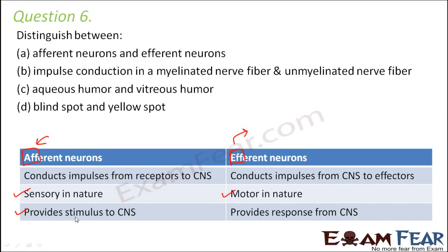Afferent neurons provide stimulus to the CNS, bringing information in. Efferent neurons provide the response from the CNS, taking it away and sending it to the effectors.